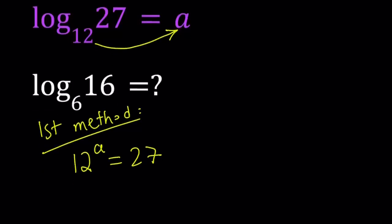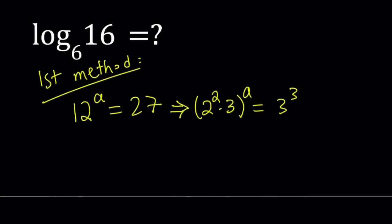12^A equals 27, and 12 can be written as 2² times 3. I'm doing the prime factorization on 12, and 27 can be written as 3³. Since A is a common power, we can write this as 2^(2A) times 3^A equals 3³.